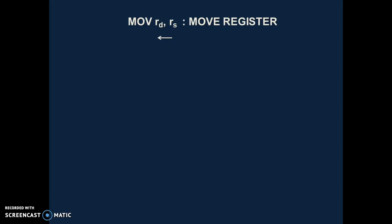Hello friends. Today we are going to see the 8085 instruction MOV. Here R stands for register, that's why this instruction is MOV register. The suffix D stands for destination and S stands for source. MOV means move the content of the source register to the destination register.